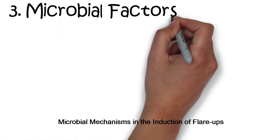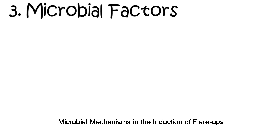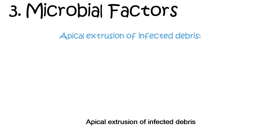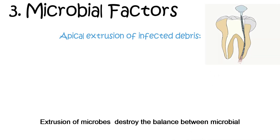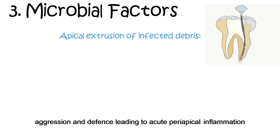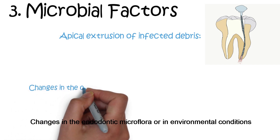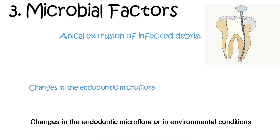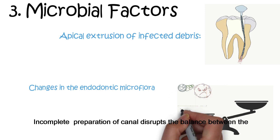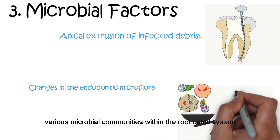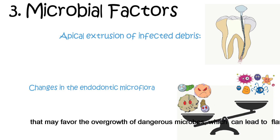Next is the microbial mechanism in the induction of flare-ups. First is apical extrusion of infected debris — extrusion of microbes destroys the balance between microbial aggression and defense, leading to acute periapical inflammation. Second is changes in the endodontic microflora or environmental conditions. Incomplete preparation of the canal disrupts the balance between various microbial communities within the root canal system, which may favor the overgrowth of dangerous microbes leading to flare-up.